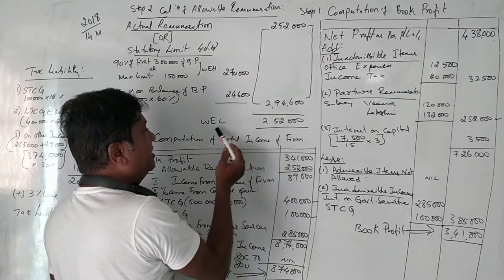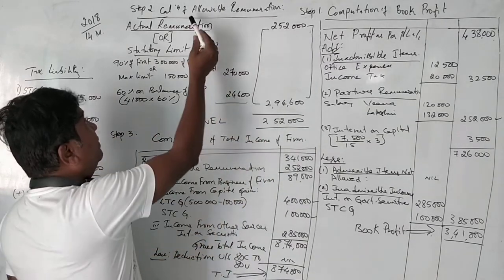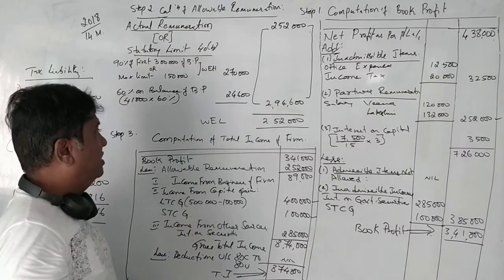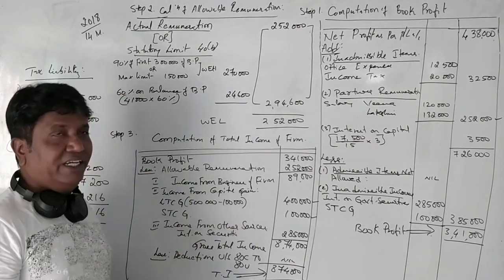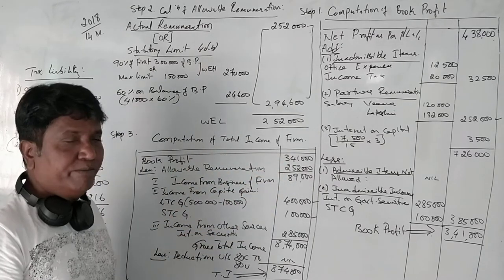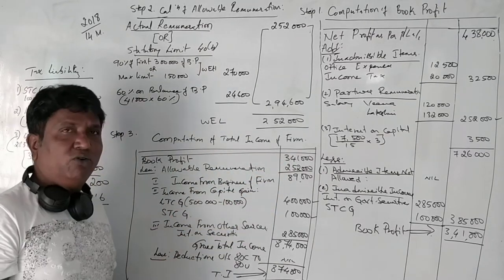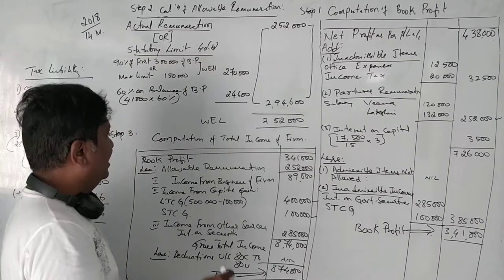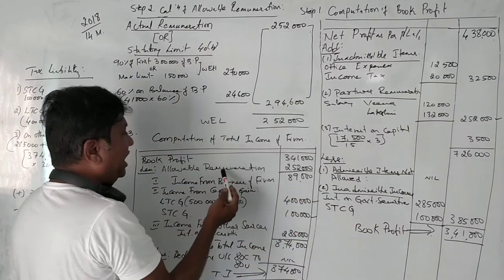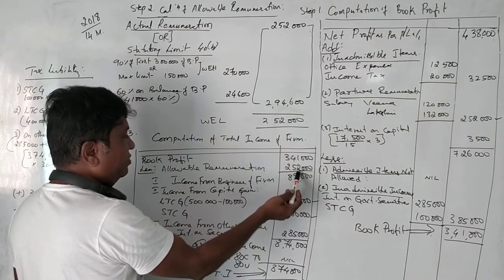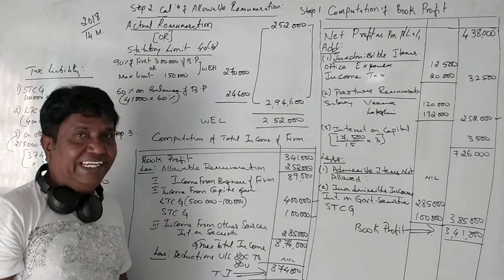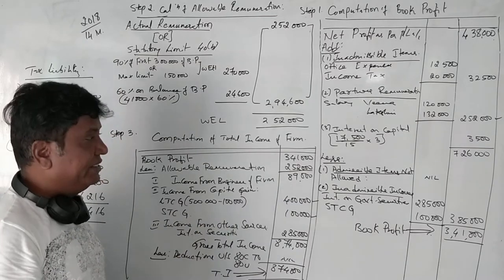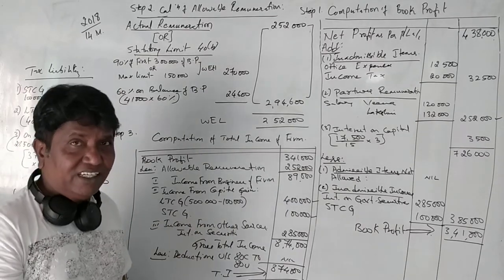Step three: Computation of total income of the firm. To calculate income from business: book profit is Rs. 3,41,000 and allowable remuneration is Rs. 2,52,000, so income from business of the firm is Rs. 89,000. Apart from that, we have income from capital gains.